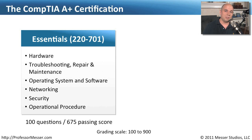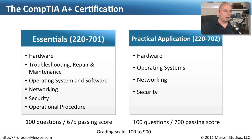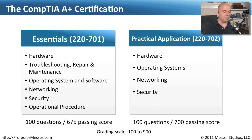To get your A-plus you'll also need to pass a second exam called the Practical Application exam, number 220-702. This is a little bit more of a practical use of the things you learned in the Essentials exam, with a lot more emphasis on troubleshooting hardware and solving problems in operating systems, networking, or security. On the 702 exam you will need to pass 100 questions with a score of 700 — a little bit higher than what you might see on the Essentials exam.